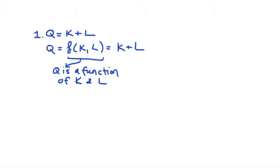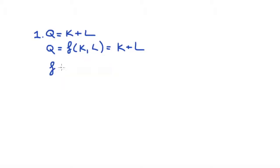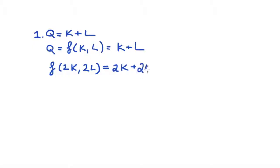Recall, returns to scale is all about thinking about how output changes when our inputs to production change. So let's imagine that I double my inputs. I'm going to evaluate the function with two times the level of capital and two times the level of labour. When I rewrite the production function K plus L, I'm going to place two times K and two times L every time I see K and L in our original function, because we're doubling our inputs.